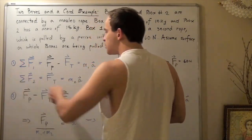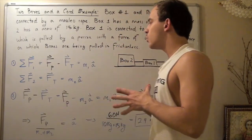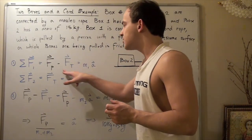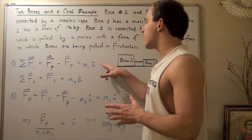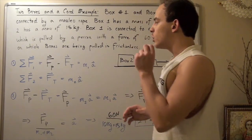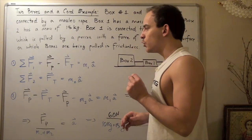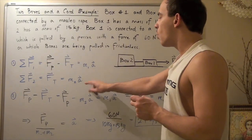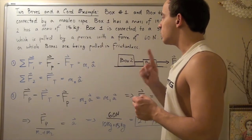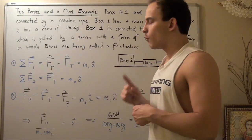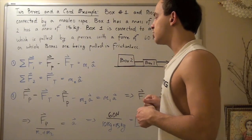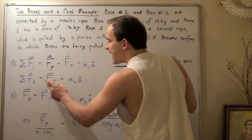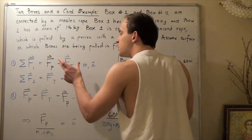Now notice we have two equations and two unknowns. We don't know what the tension in the rope is, and we don't know what the acceleration is. But because we have two equations and two unknowns, we can solve for one of them. Let's solve for the acceleration by taking F subscript T from the second equation and plugging it into the first equation. That will give us one equation with one unknown.